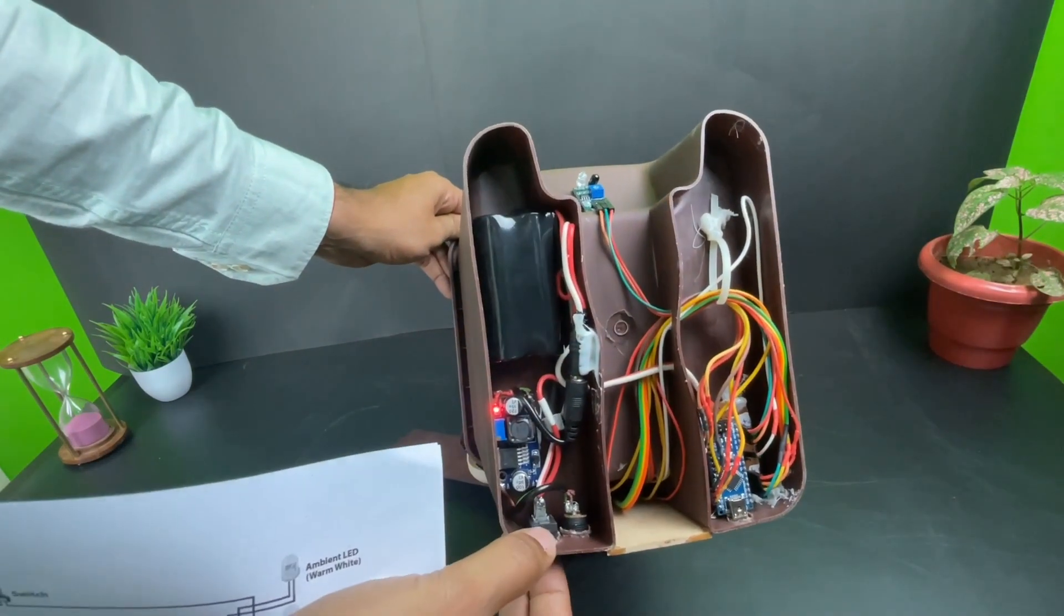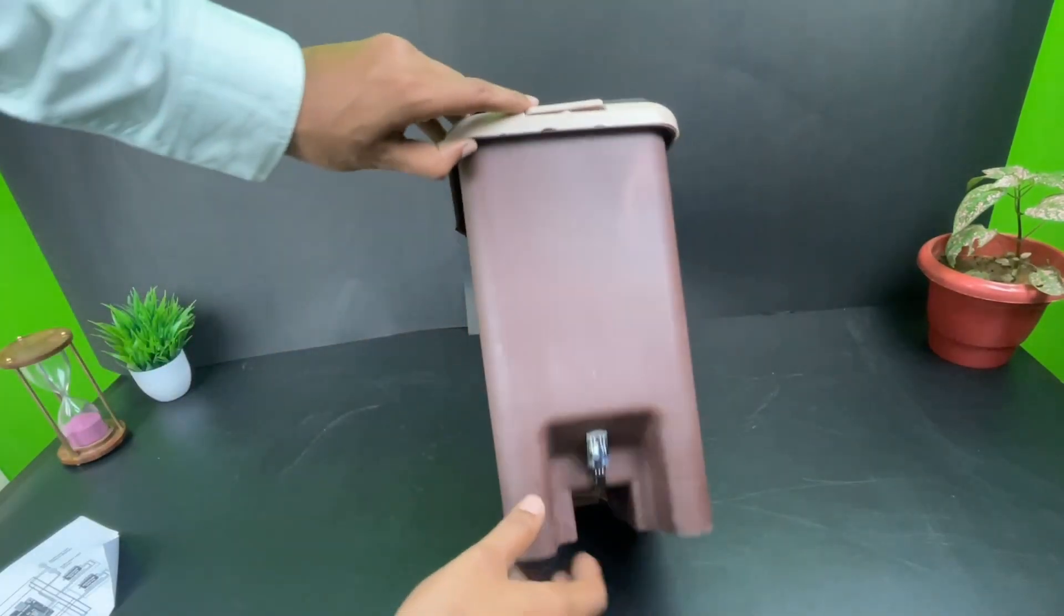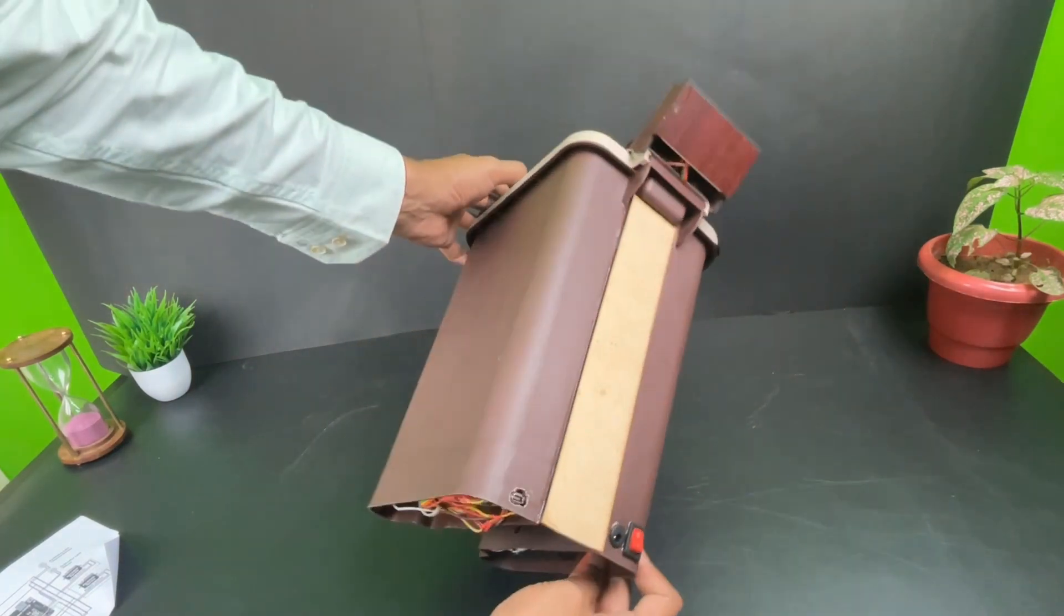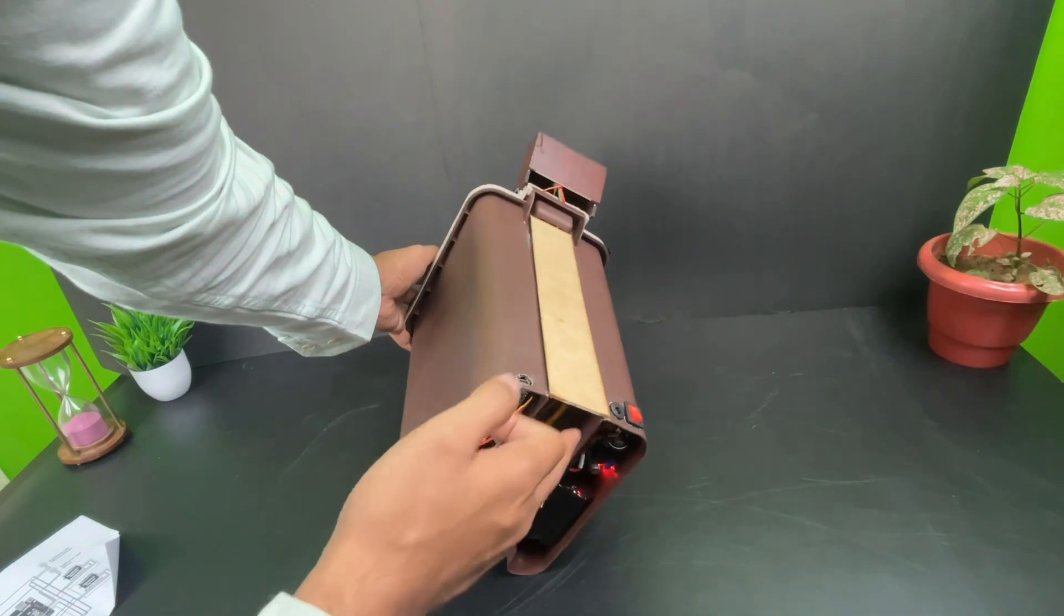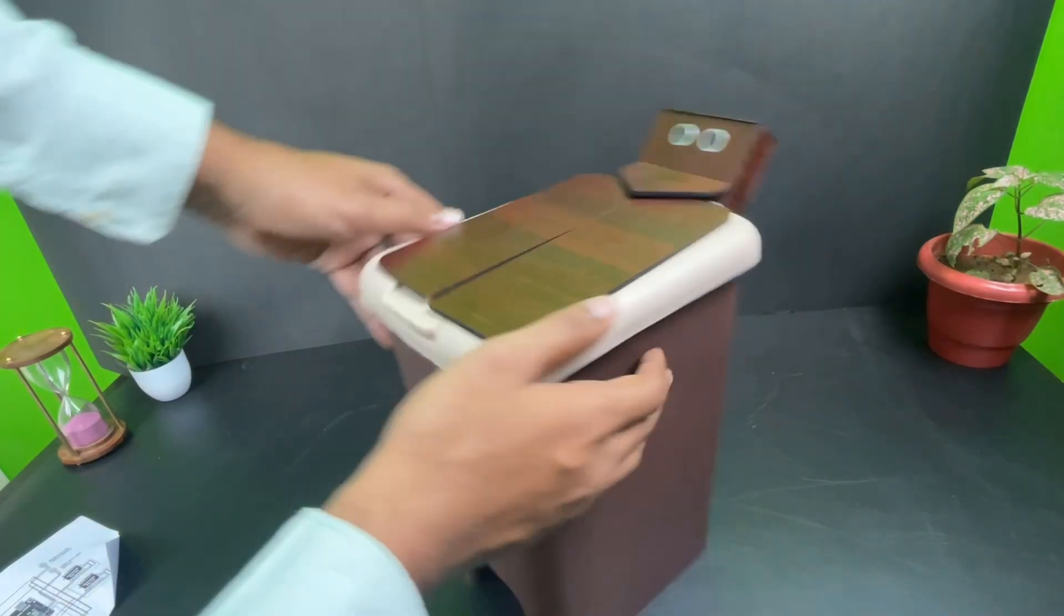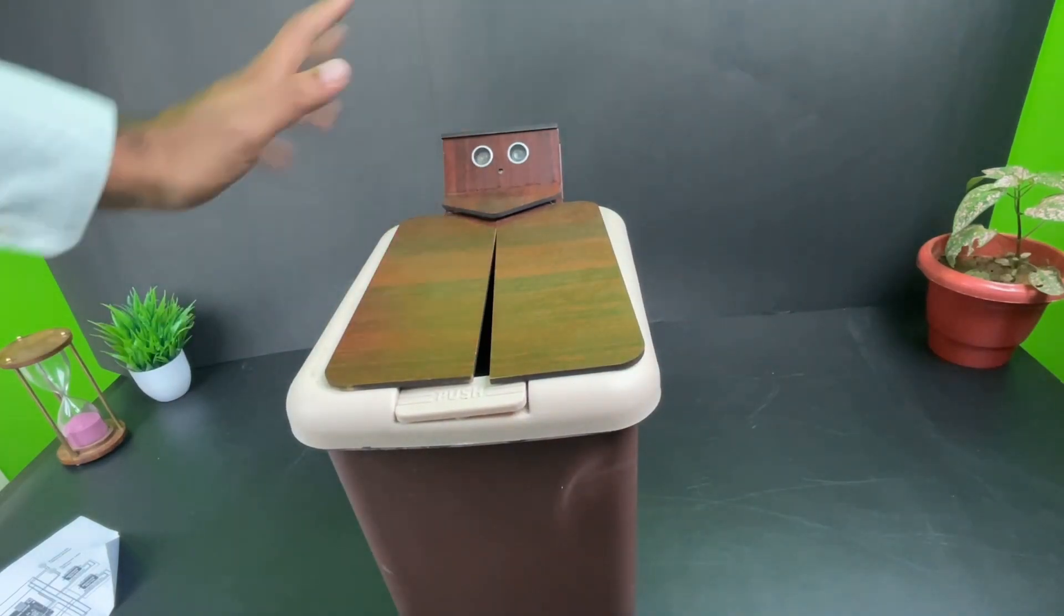Let me turn this off. What we have done here is with all the circuitry over here, we have also covered the backside of the dustbin. The wires are running all the way from here up to here to connect to the ultrasonic sensor and to the LED over here.